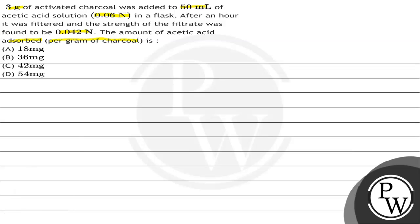So basically in the question, he has told you that there is a flask which has 50 mL acetic acid solution. The initial normality was 0.06 normal. After you add 3 grams of charcoal in it and observe it for an hour,